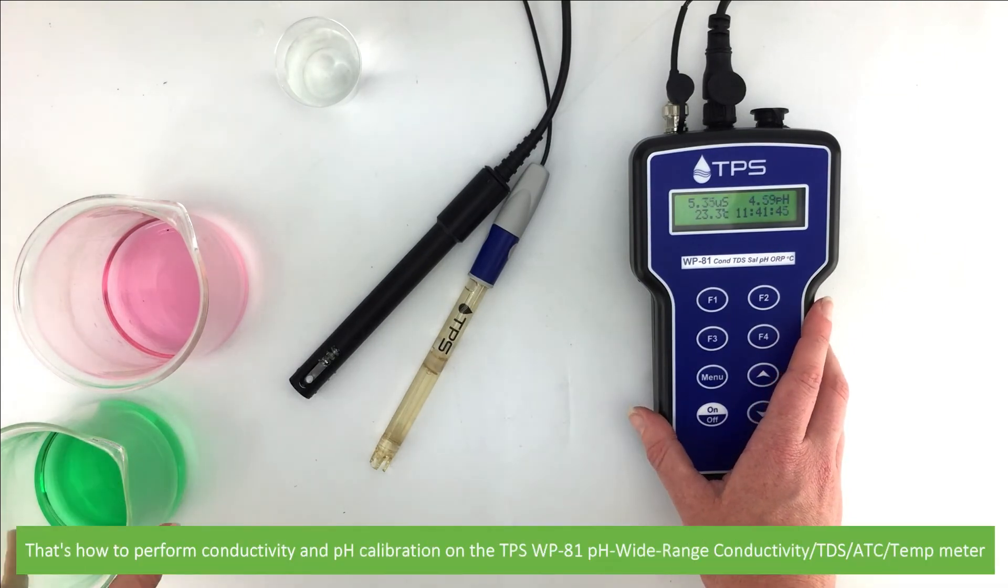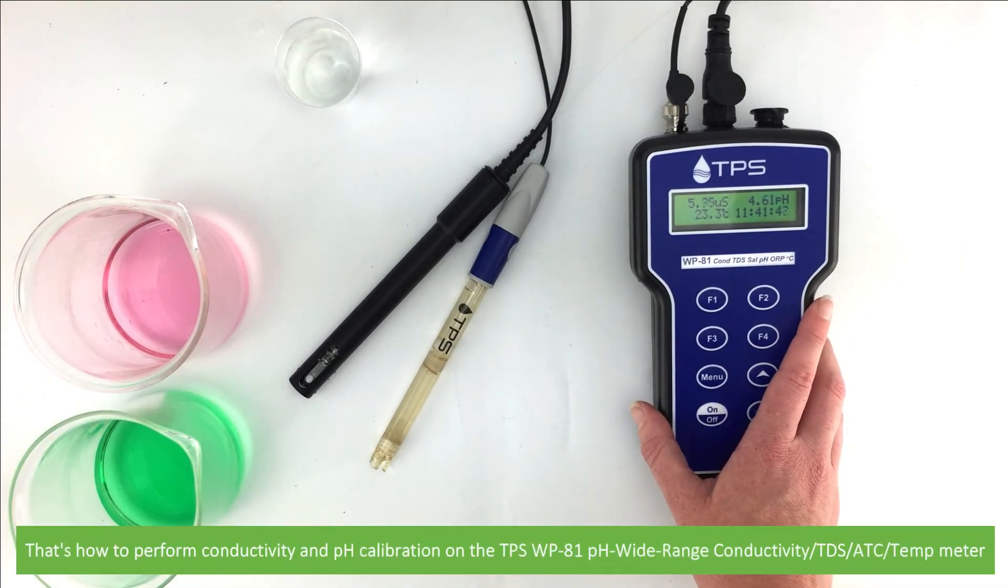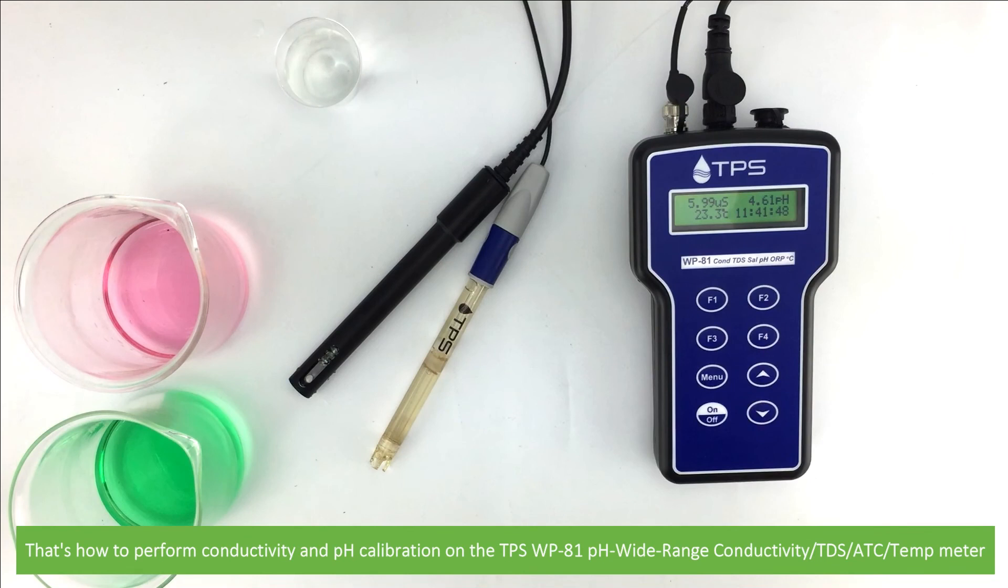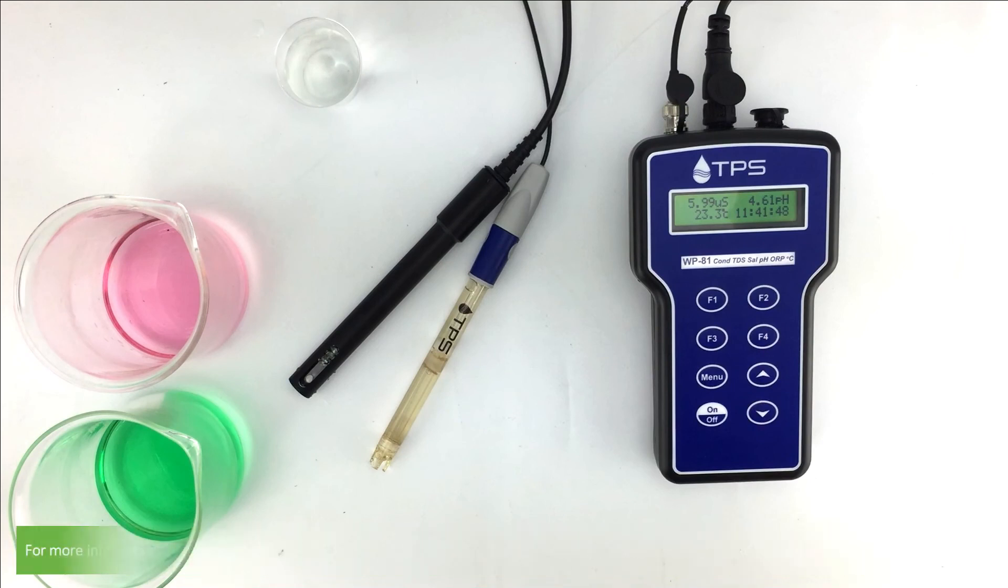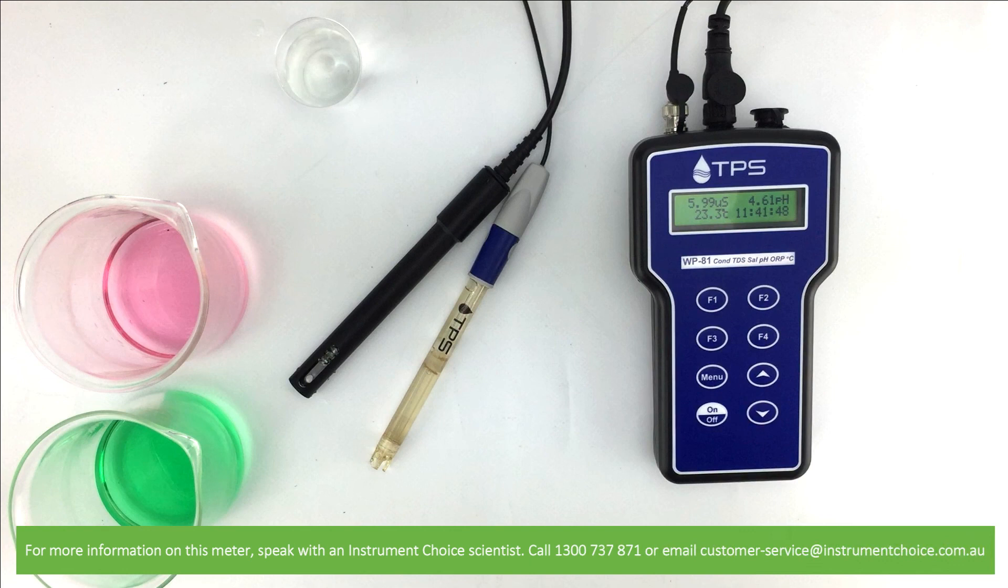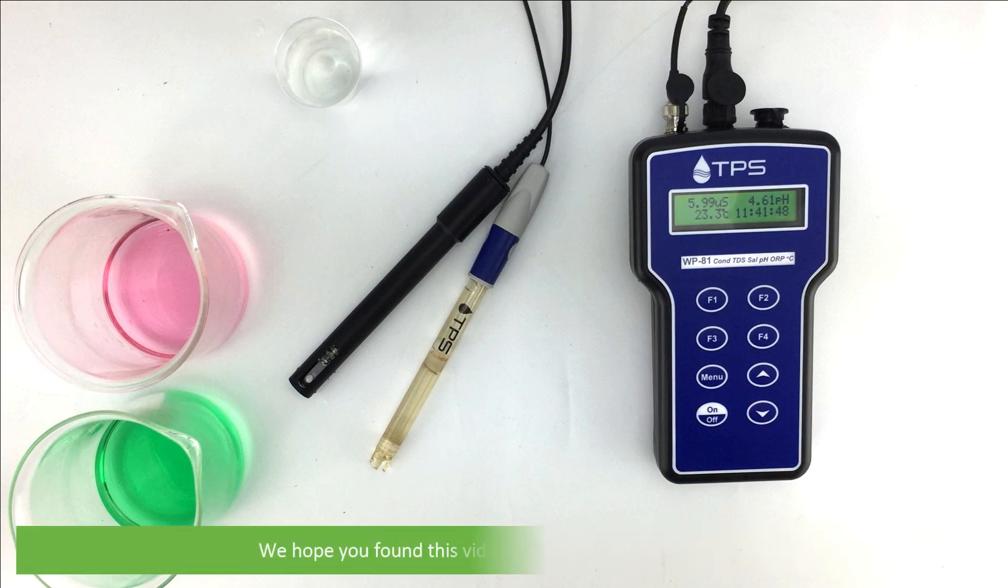And that's how to perform conductivity and pH calibration on the TPS WP-81 pH conductivity and temperature meter. For more information on this meter, speak with an Instrument Choice scientist. Call 1300 737 871 or email customer-service at instrumentchoice.com.au. We hope that you found this video helpful. Thanks for watching.